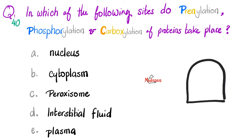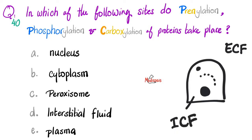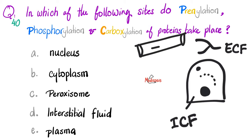First, let's draw a cell. Here is a cell. This is my nucleus. Outside the nucleus, there is the cytoplasm. The peroxisome is an organelle in the cell. Outside the cell, there is the extracellular fluid, because inside the cell you have the intracellular fluid. This extracellular fluid is divided into two parts. Whatever is in the bloodstream or in the blood vessel is called the plasma or the serum. Outside it, there is the interstitial fluid, also known as ISF.